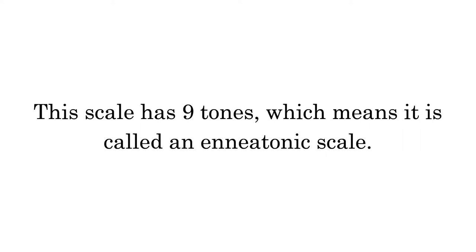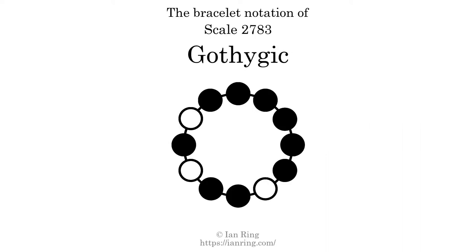This scale has nine tones, which means it is called a nonatonic scale. This is a bracelet notation diagram of scale 2783. The shaded circles represent tones that appear in the scale, and they are read clockwise, starting at the top.